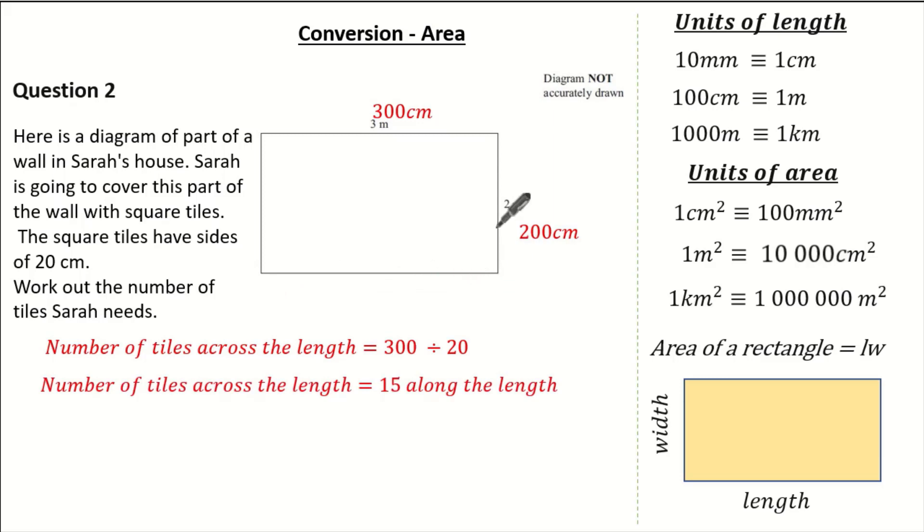Now let's have a look at our width. Well, I know each square tile is 20cm in width, and we have to fit them along 200cm width. So that means 200 divided by 20 means I can fit 10 square tiles along the width.